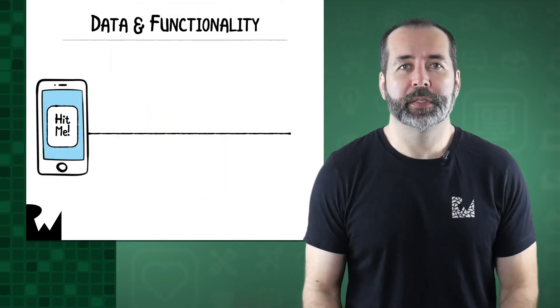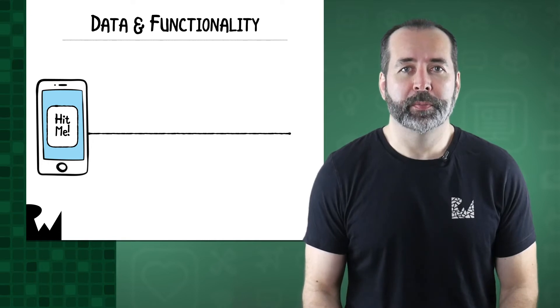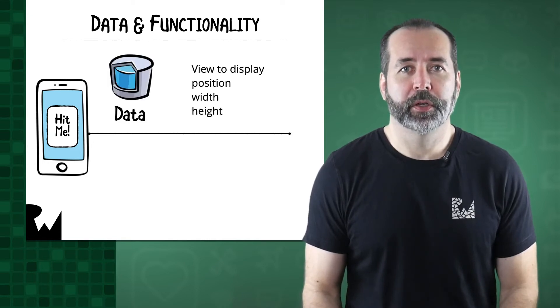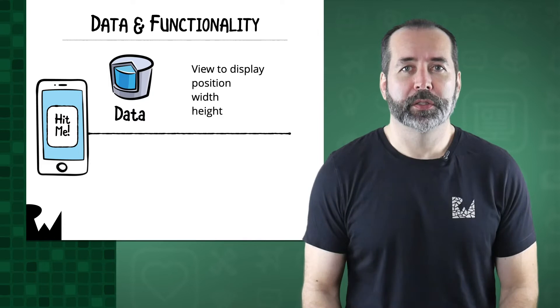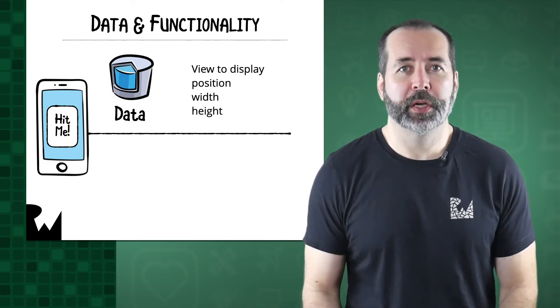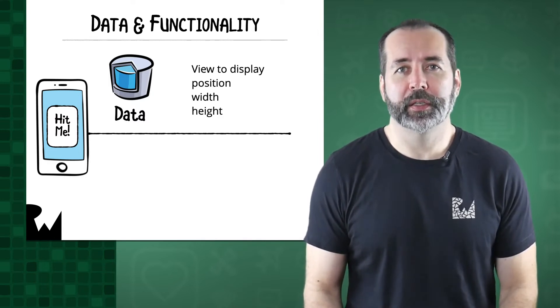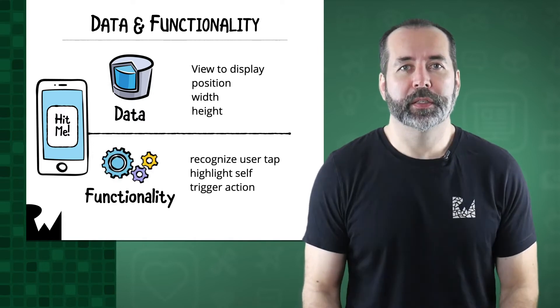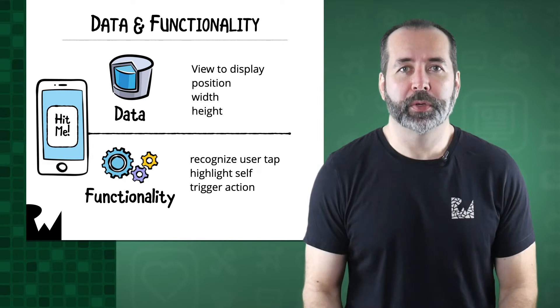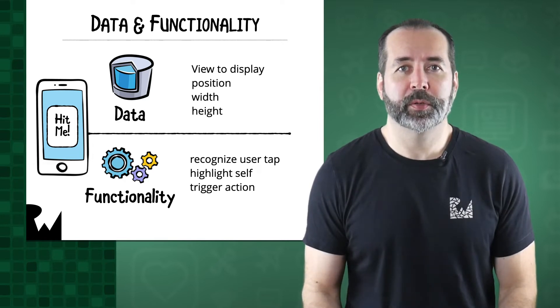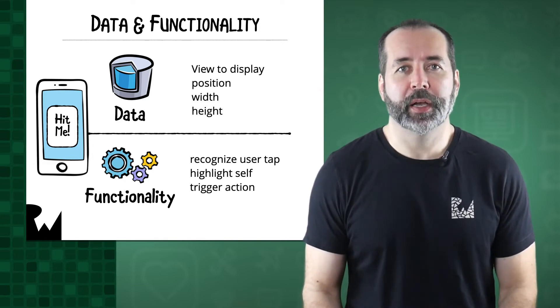An object can have both data and functionality. For example, consider the hit me button in your app. First, it has some data, such as the widget to display inside, its position on the screen, its width and height, and so on. Second, it has some functionality, such as the ability to recognize when the user presses on it, highlight itself when pressed, and trigger an action in response.